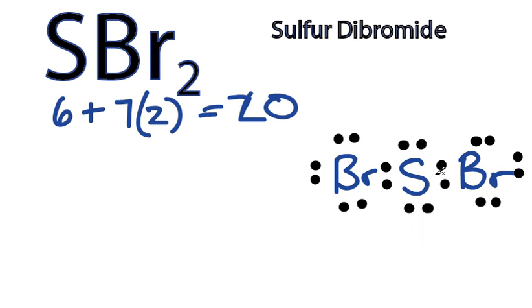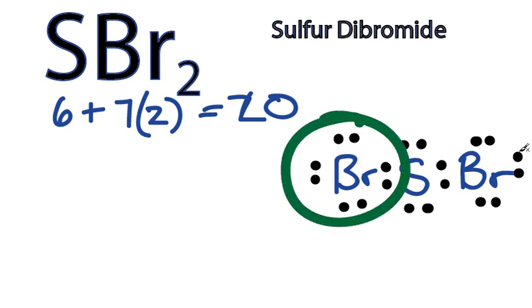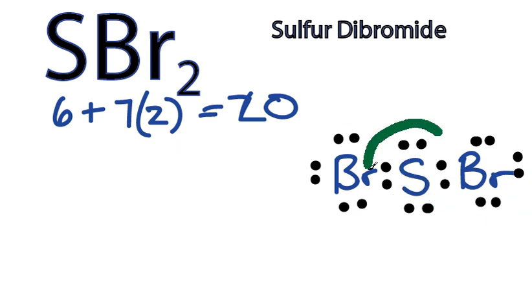We've used all 20 valence electrons. Let's see how we do with our octet. This Bromine has 8, and this Bromine has 8. So those outer shells are full, and the center, Sulfur, has 8 as well, and we've used 20 valence electrons.